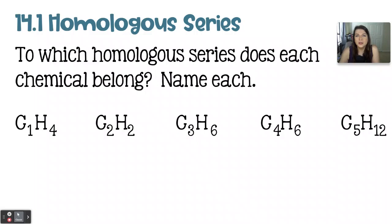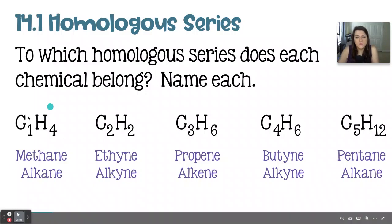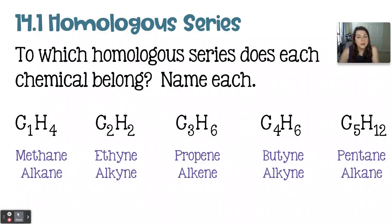To begin, we are going to take a look at the homologous series. The question here is: to which homologous series does each chemical belong, and to name it. We can use a simple algebraic formula to determine if a chemical formula is part of the alkane, alkene, or alkyne homologous series. To identify if something is an alkane, the number of carbons represents N. For an alkane, you double that number and then add two. And if it matches, then that's an alkane.